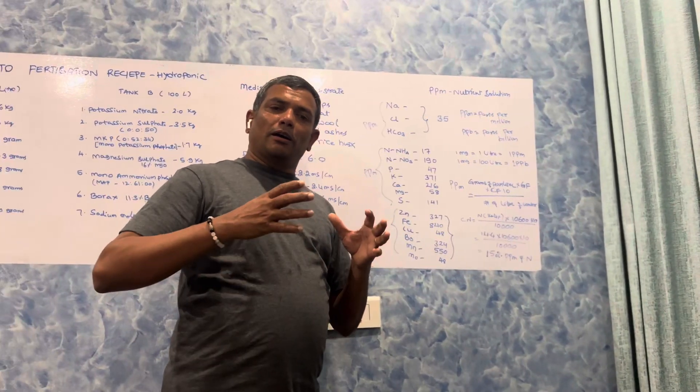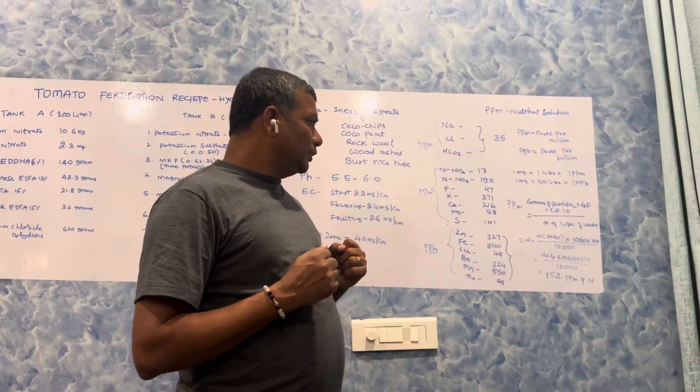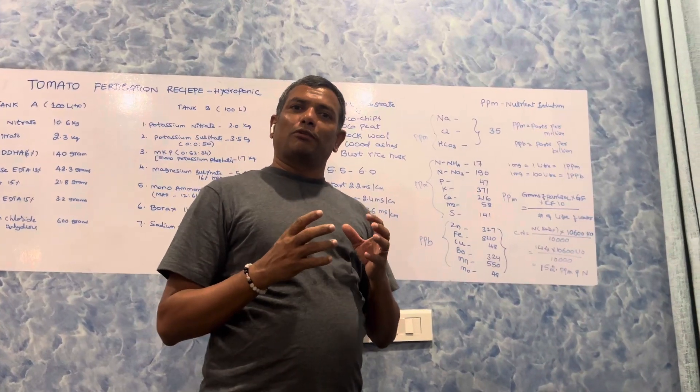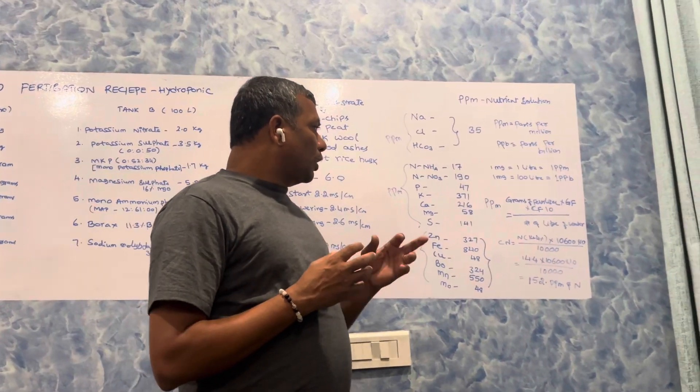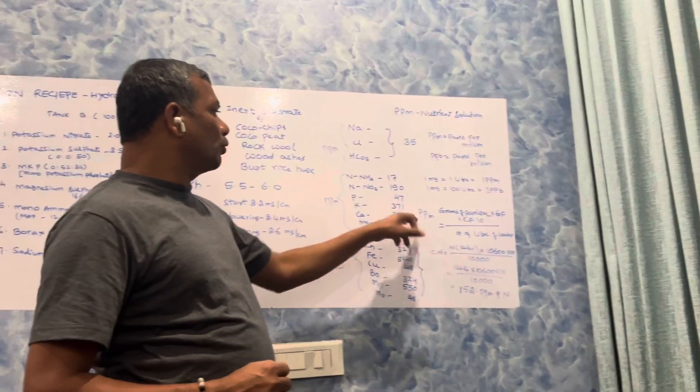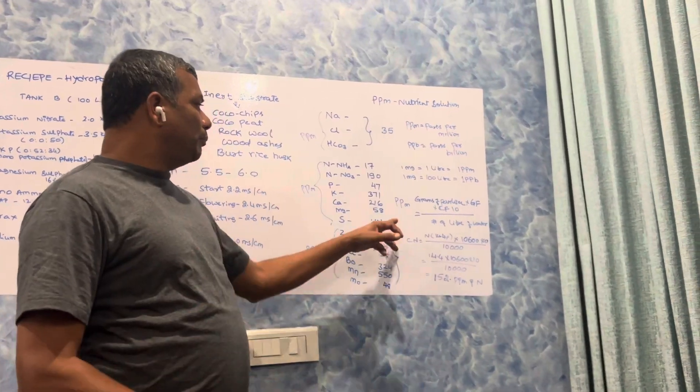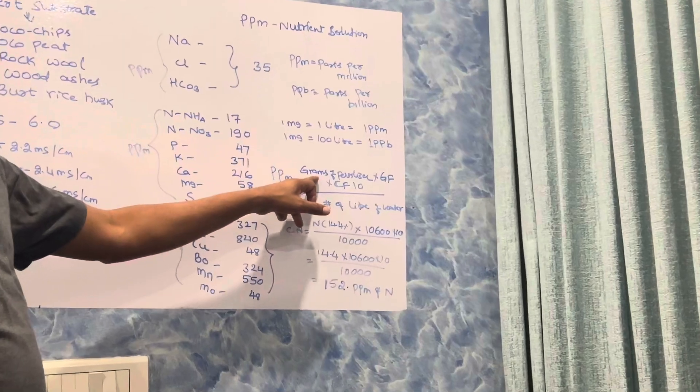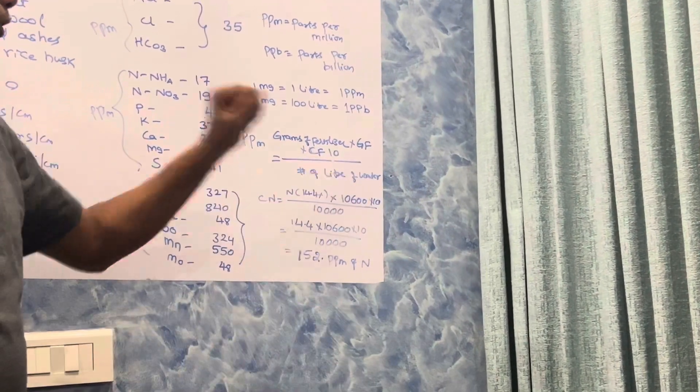How to calculate PPM? I'm going to tell you the simplest formula for calculating the PPM. The formula is: PPM equals grams of fertilizer times grade of the fertilizer times correction factor 10, divided by number of liters of water.